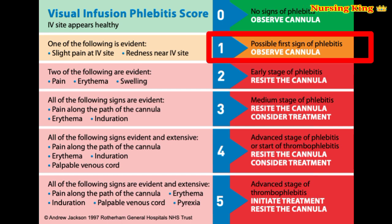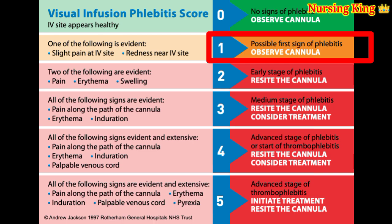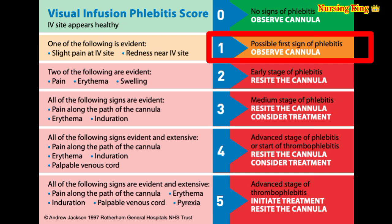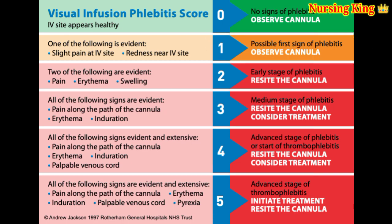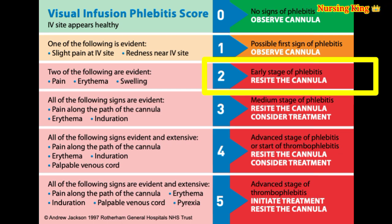Score 1 means there is a possibility or chance of phlebitis, but the IV site is good. Only slight IV site pain is present and a little bit of nearby redness is there. The IV line will still be patent at score 1.